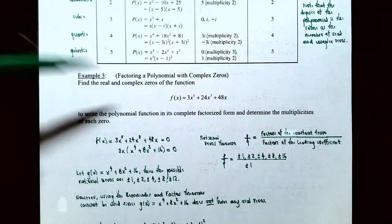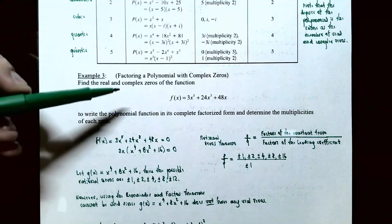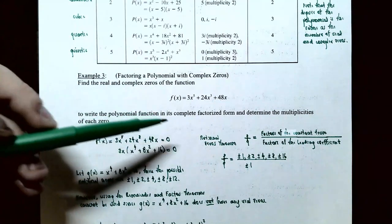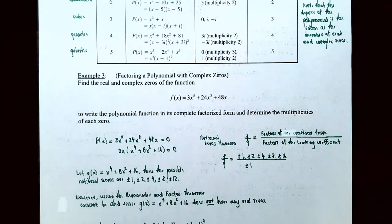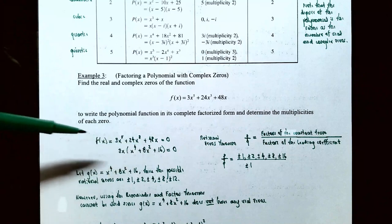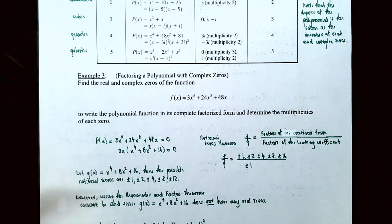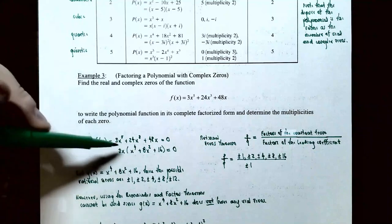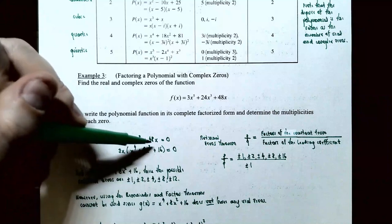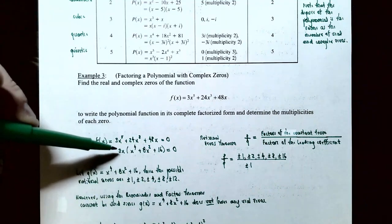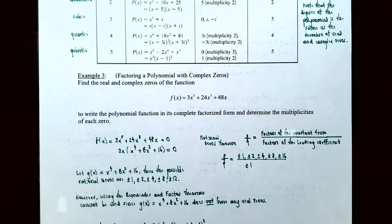Example 3: find the real and complex zeros of f(x) = 3x⁵ + 24x³ + 48x. Setting f(x) = 0, notice all terms share a factor of 3x. Factoring out 3x gives 3x(x⁴ + 8x² + 16) = 0. So x = 0 is a real zero, and we need to factor x⁴ + 8x² + 16 further.